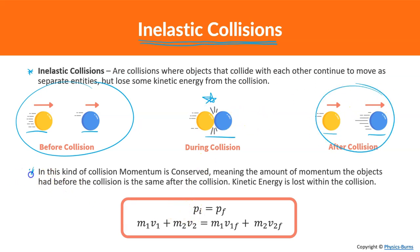In this kind of collision, momentum is conserved, meaning the amount of momentum the objects have before the collision is the same after the collision. Kinetic energy is lost within the collision. The total momentum of both objects before equals the total momentum after.